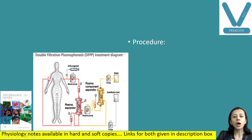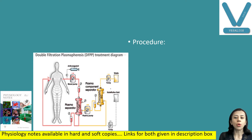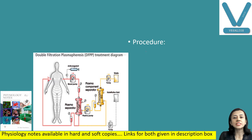How to perform Plasma Pheresis: whole blood is removed — withdrawn from the animal or the person — and the cells are suspended in the same volume of Ringer's lock or normal saline, and then it is re-injected into the animal. This is repeated, and that leads to a progressive decrease in the concentration of plasma proteins.